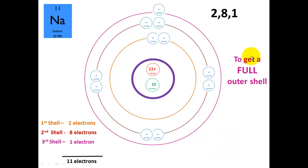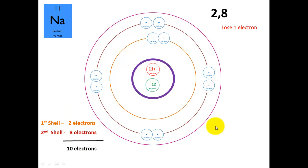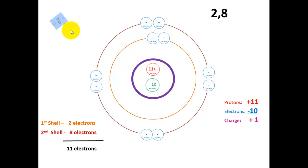To get a full outer shell, sodium can either lose 1 electron or gain 7 electrons. It's going to choose to lose 1 electron — there it goes. Now we have 2 in the first shell and 8 in the second shell, giving an overall total of 10 electrons. So we've got 11 protons and 10 electrons, giving a total charge of positive 1. The sodium atom is now an ion — a charged atom — and it's written as Na⁺. This positive could be written as 1+, but a lone positive sign implies a charge of plus 1.